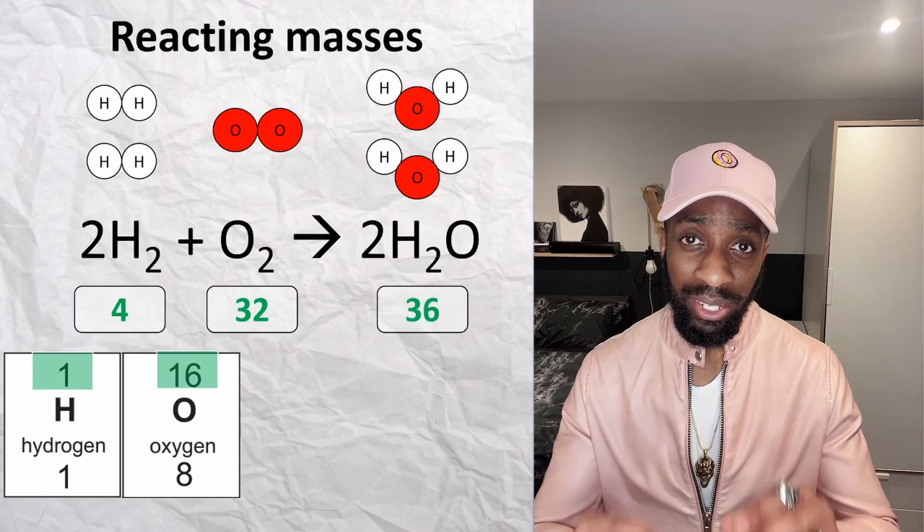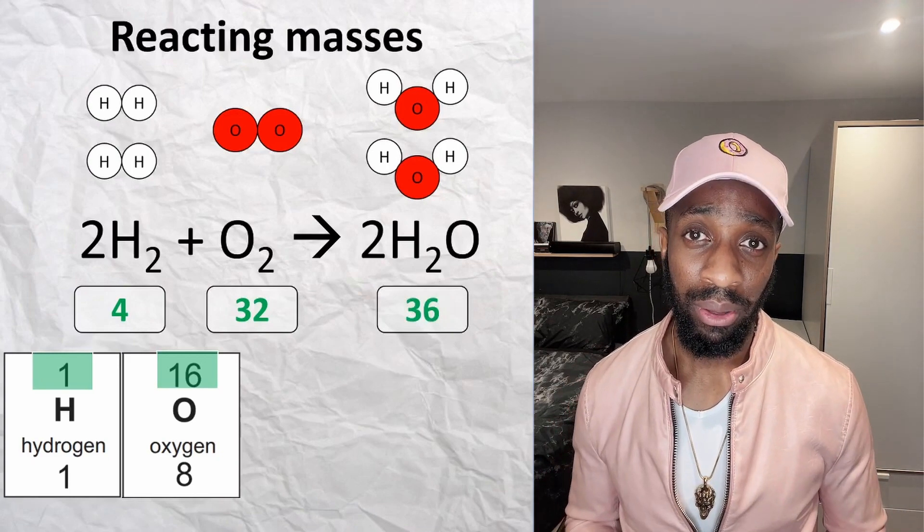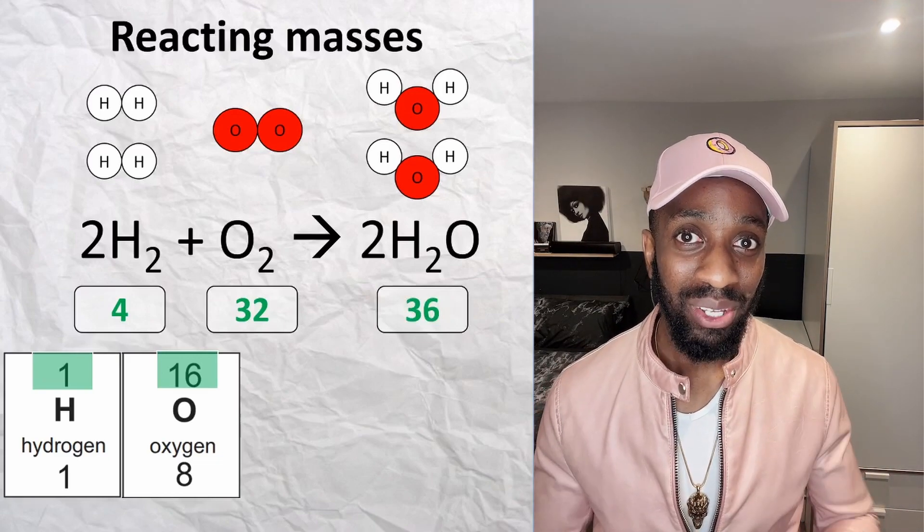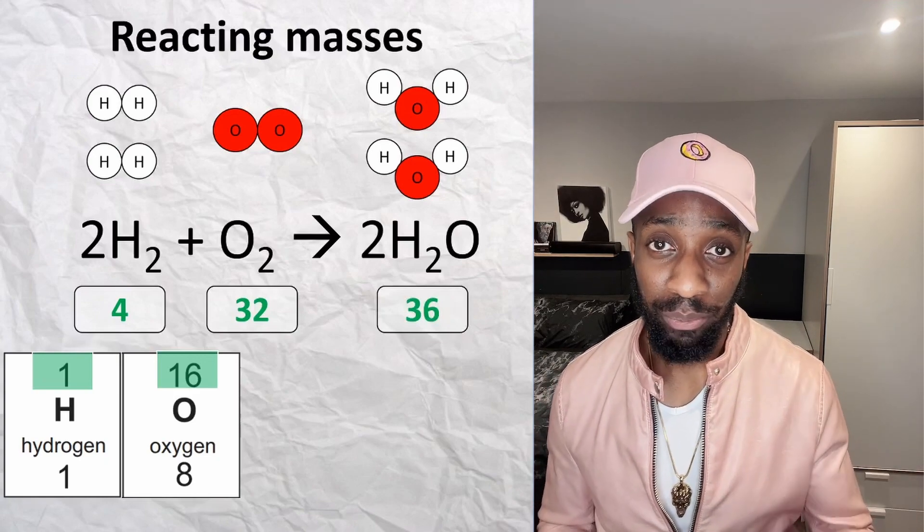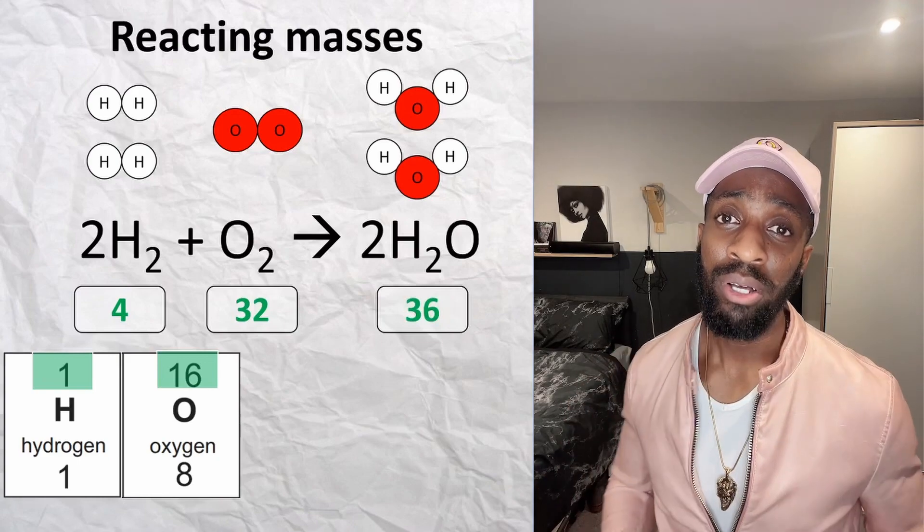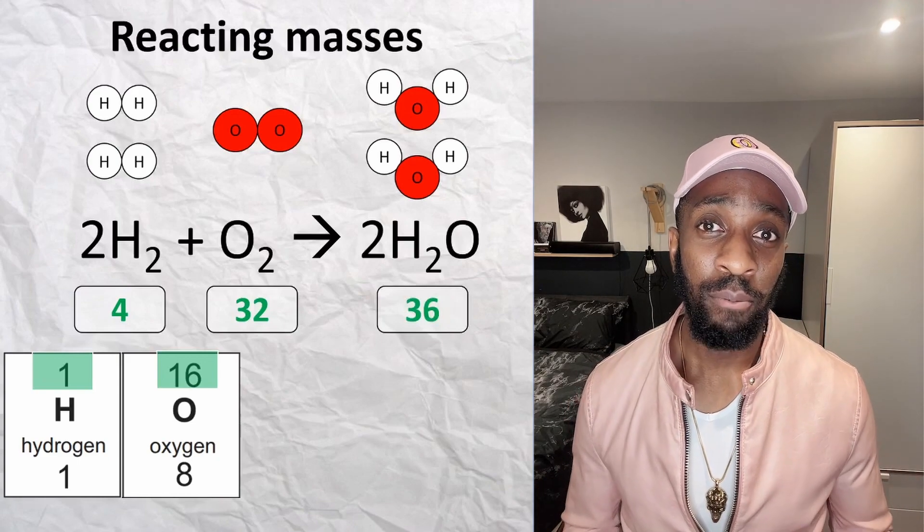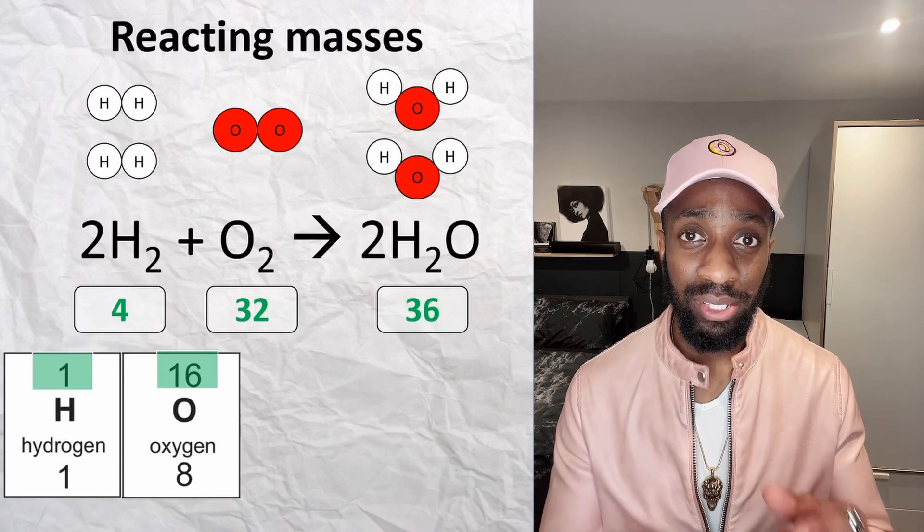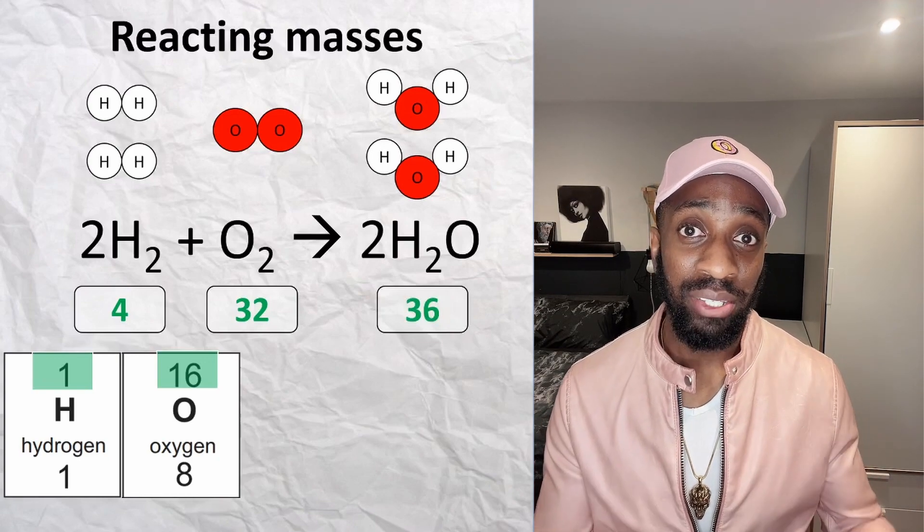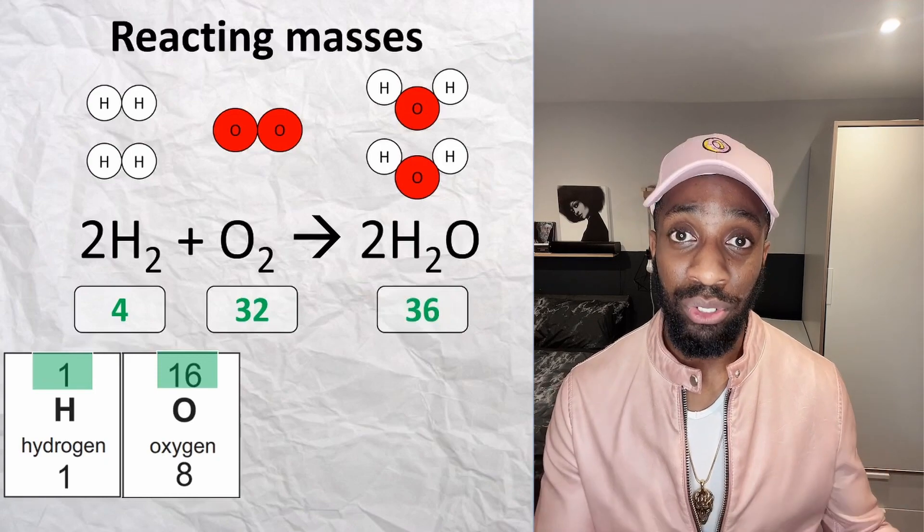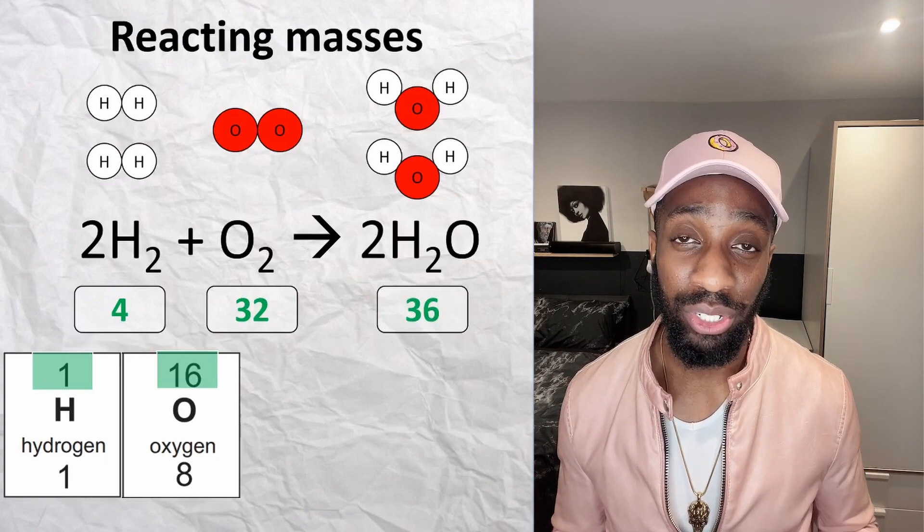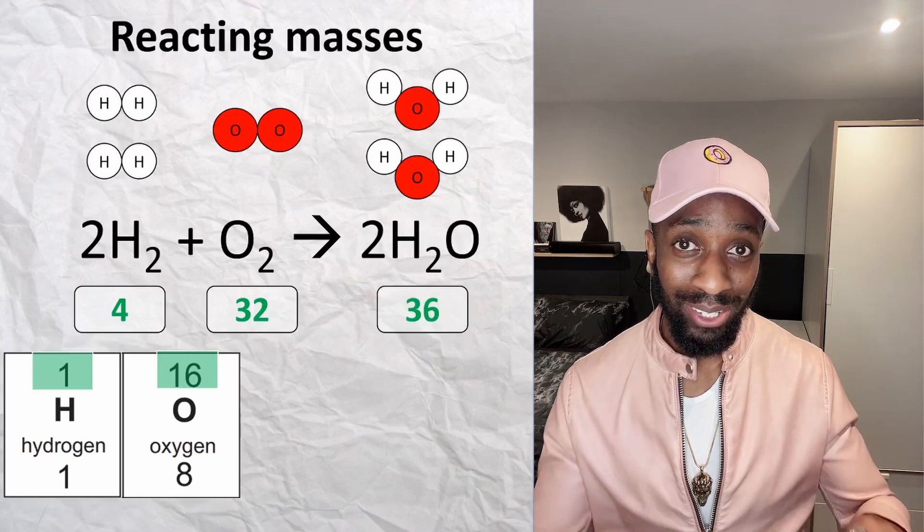So that hidden calculation I was talking about earlier means that if we react 4 grams of hydrogen with 32 grams of oxygen, which should produce 36 grams of water. The whole concept of reacting masses is that you will be given a certain amount of mass of a particular substance, and you're going to be asked how much mass of another substance will be produced or would it take to make that mass. That seems like gibberish, so let's look at a question.